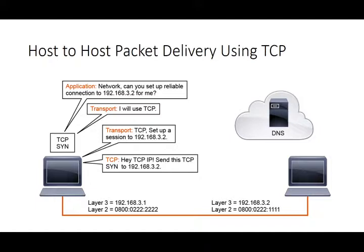The application wants to set up a connection to 192.168.3.2, which is the destination in our topology. The application passes data to the application layer of the TCP/IP stack. We skip the presentation and session layers. The application layer says it needs to send this reliably, so it uses the transport layer. The transport layer says it will use TCP — the connection-oriented service — with sequence numbers, acknowledgements, and all that.